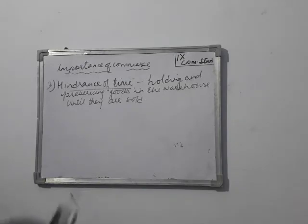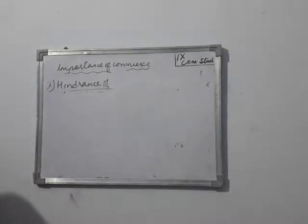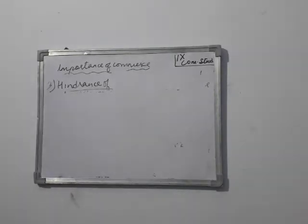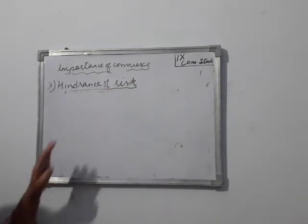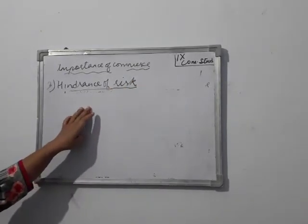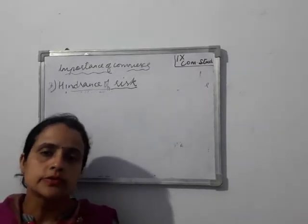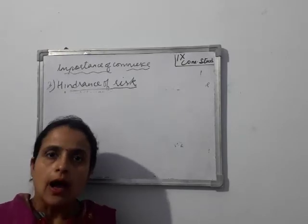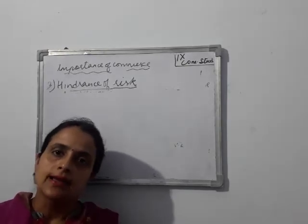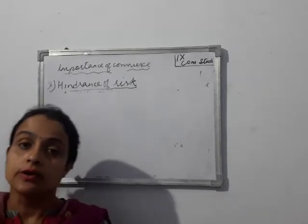The next importance is hindrance of risk. It happens that producers bear risk. Obviously, every producer faces risk. Without risk it is not possible to do production. Every producer faces the risk of their work, but the risks can be managed through insurance.